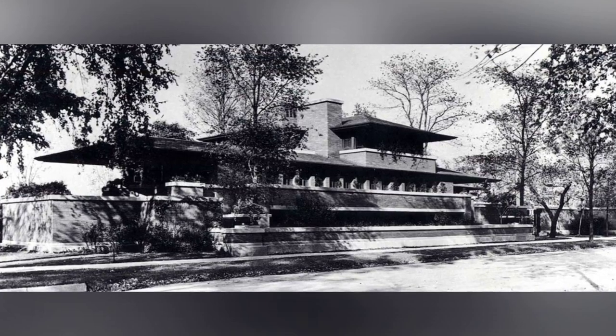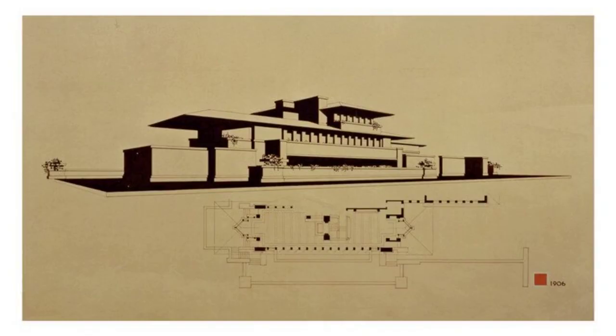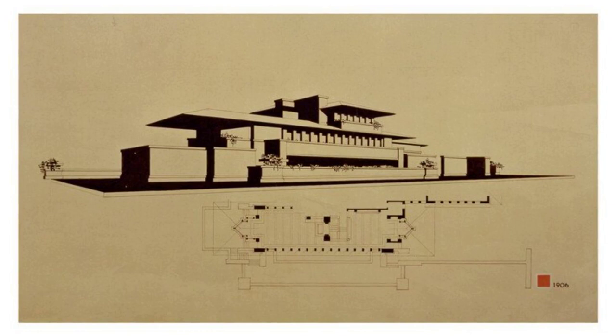Exploring the iconic Robie House by Frank Lloyd Wright. The Robie House, designed by Frank Lloyd Wright, was constructed between 1908 and 1909 in Oak Park, Illinois. It was commissioned by Frederick C. Robie, a 28-year-old assistant manager of the Excelsior Supply Company.